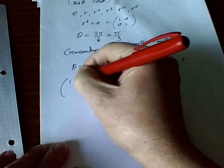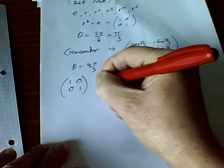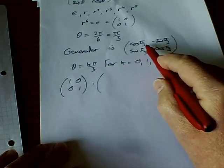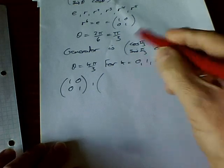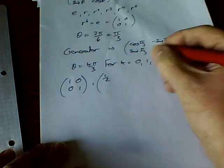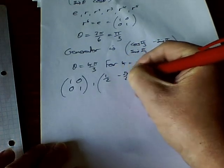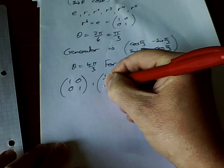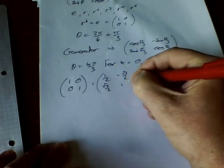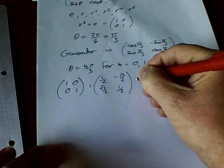For k = 0, the identity is the matrix 1, 0, 0, 1. For k = 1, cos(π/3) = 1/2 and minus sin(π/3) = minus √3/2, sin(π/3) = √3/2 and cos(π/3) = 1/2. That gives us two elements.